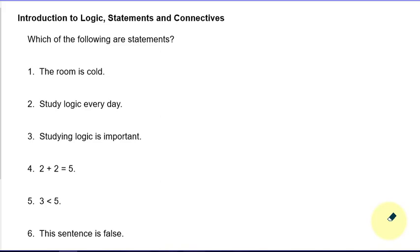In this video, we'll do an introduction to logic, statements, and connectives. The first thing I'll do is look at the following sentences. Number one says: the room is cold. This one is a statement, because we can assign it a truth value. It doesn't matter if it might seem like an opinion — somebody might say it's cold and somebody might disagree. As long as you can give it a truth value, it'll be a statement in logic.